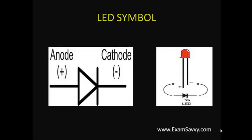And symbol of LEDs. The image shows the symbol for LED. Anode and cathode. Anode is represented with plus symbol and cathode is represented with minus symbol. This is the symbolic representation of LED. These two images show the symbolic representation of LED.